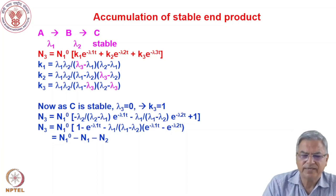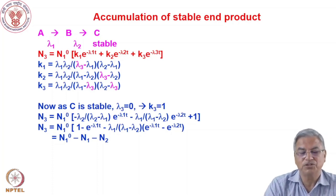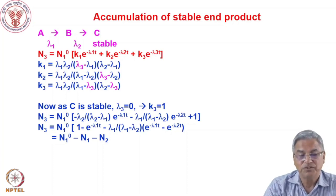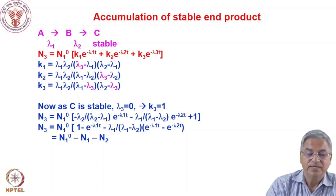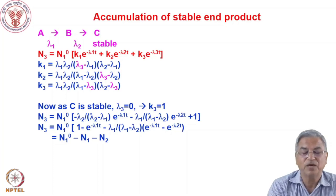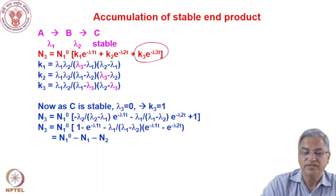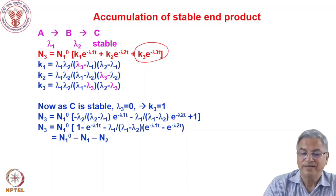There can be situations where the granddaughter, instead of being radioactive, is a stable isotope — in fact this is very common. In the case A→B→C where C is stable, it is not undergoing further radioactive decay, but you can use the formula derived for N3. When C is stable, λ3 = 0 (the half-life is infinite). Setting λ3 = 0 simplifies the coefficients: K3 becomes equal to 1, since the numerator λ1·λ2 divided by λ1·λ2 equals 1. The other terms simplify accordingly.